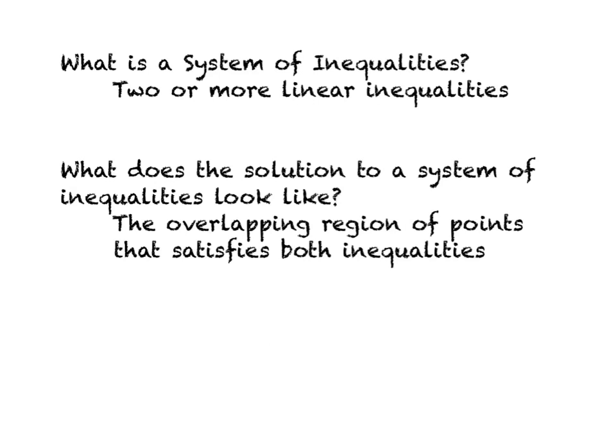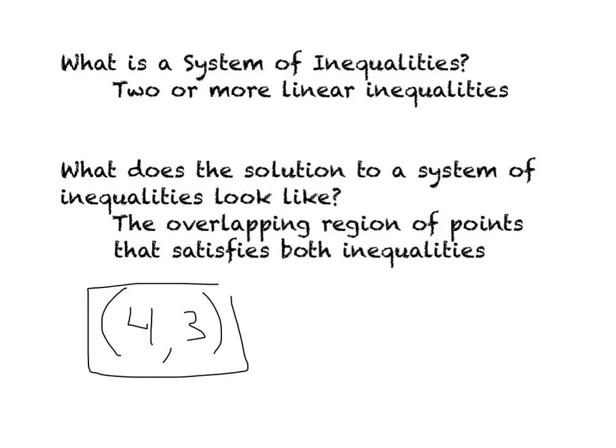The next question you might have is: what does the solution to a system of inequalities look like? The solution to a system of equations was a single point, like (4, 3). However, for a system of inequalities, the solution looks very different. We're going to have to draw a graph, and our solution is going to be the overlapping region of points that satisfies both inequalities. I'll show you what that looks like in just a moment.